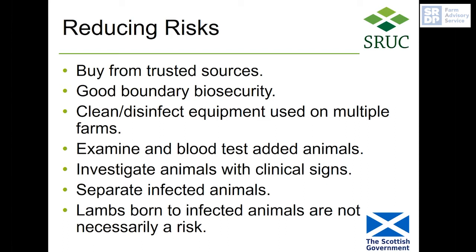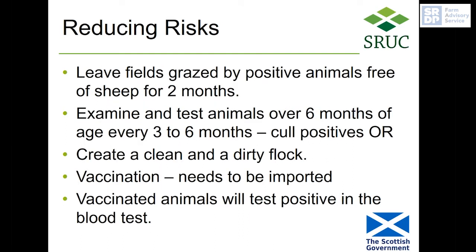If you have animals with clinical signs that are losing condition for no obvious reason, or animals with abscesses that you can sample, get them checked to find out if it is CLA or not. If you identify infected animals, they should be separated from uninfected animals. In contrast to some other iceberg diseases, lambs born to infected animals are not necessarily at risk — they may not be infected. If positive animals have grazed a particular field and you are able to leave it free of sheep for two months, it should then be safe for other sheep to graze. In flocks where there are issues with CLA, testing programs have been put in place where the whole flock over six months of age are examined and blood tested every three to six months, and positive animals are culled or separated to create a clean flock and a dirty flock.